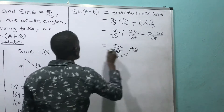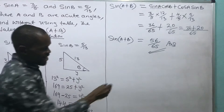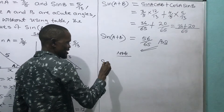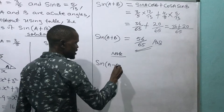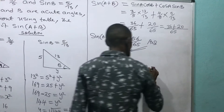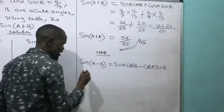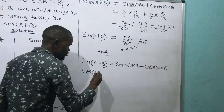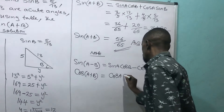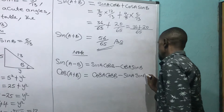And that is the answer: sin(A + B) equals 56/65. Now, note this for future questions: sin(A − B) equals sin A cos B minus cos A sin B. Also note that cos(A + B) equals cos A cos B minus sin A sin B.